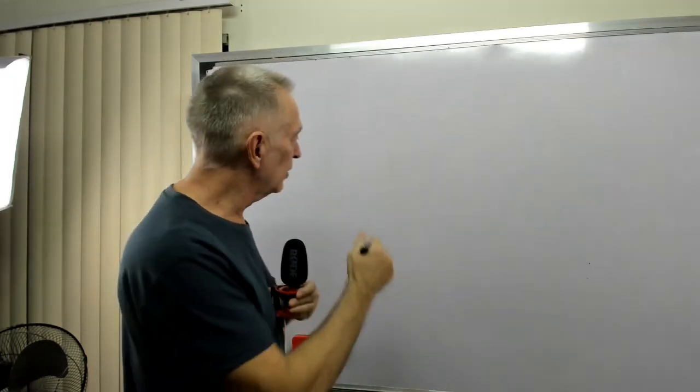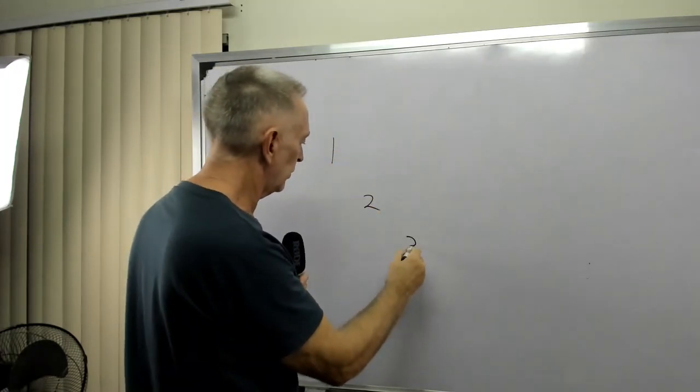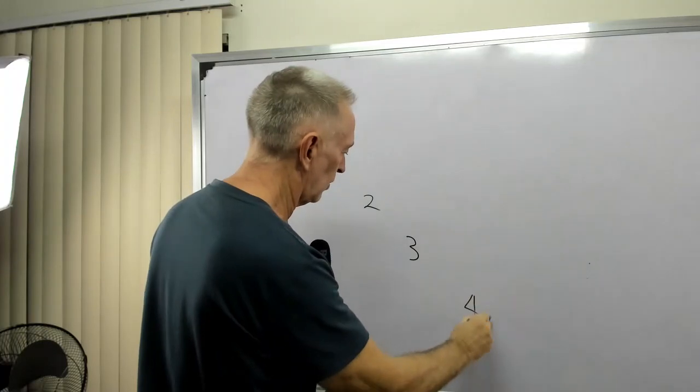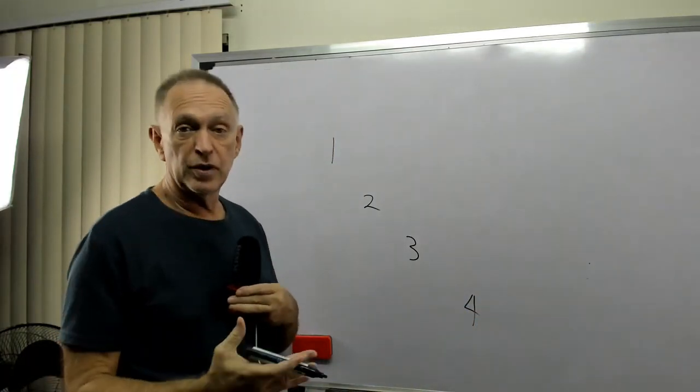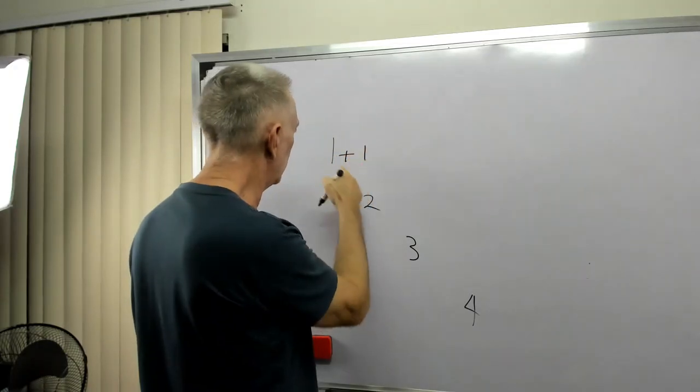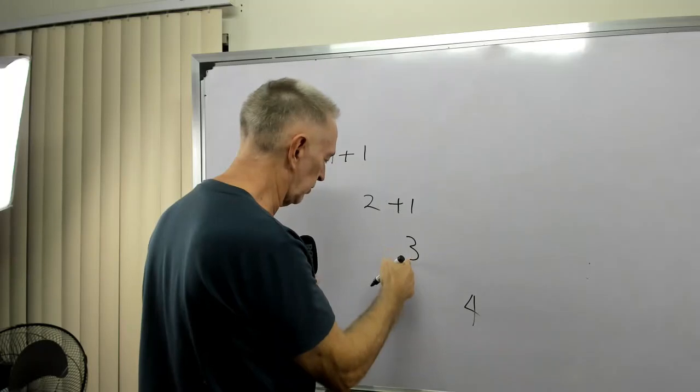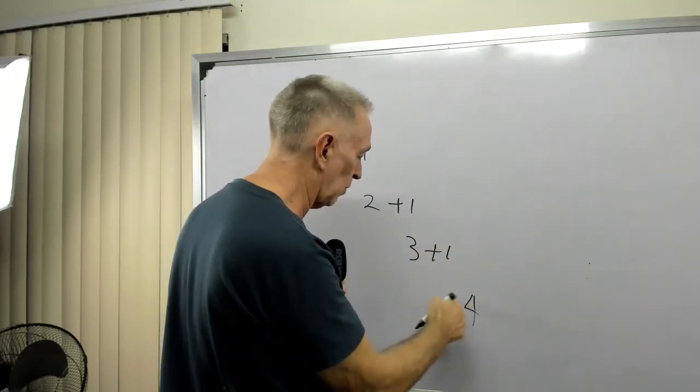You say, well, how? Because, let's say the number one, two, three, four, you can count those. Well, what is two? It's one plus one equals two. Two plus one equals three. Three plus one equals four.